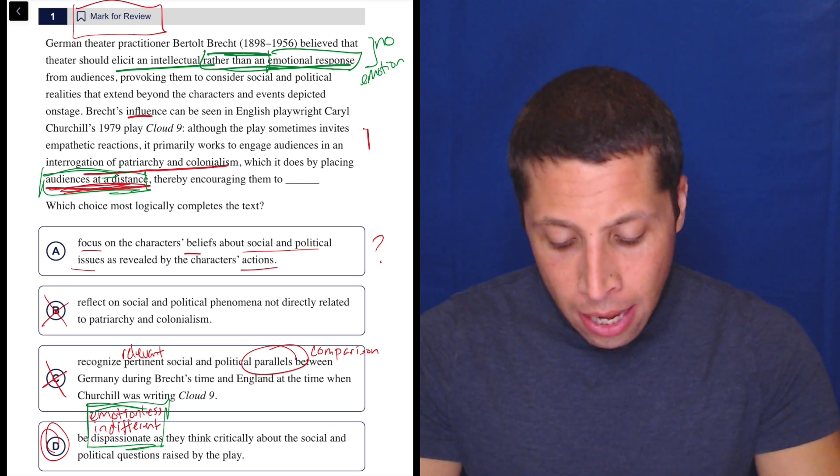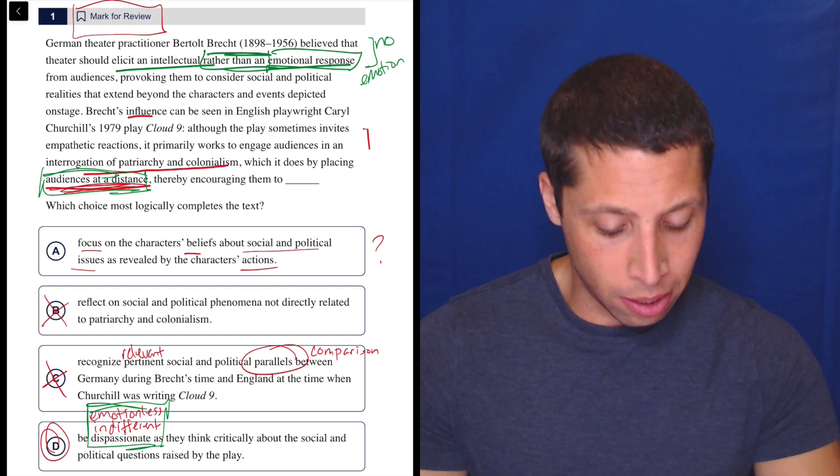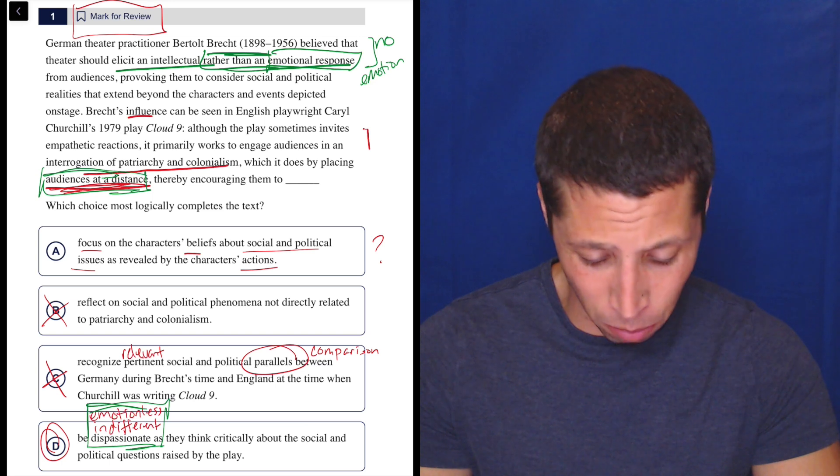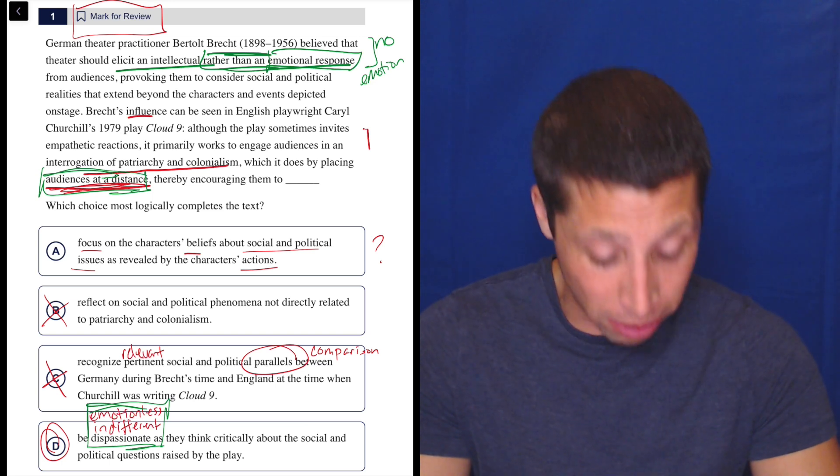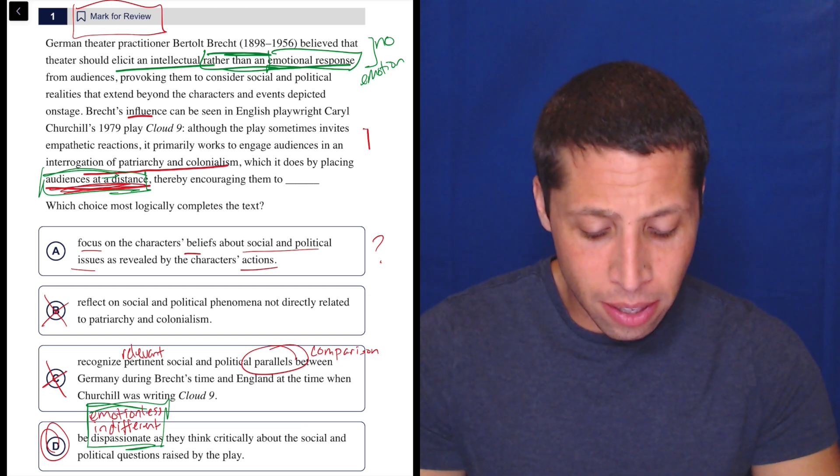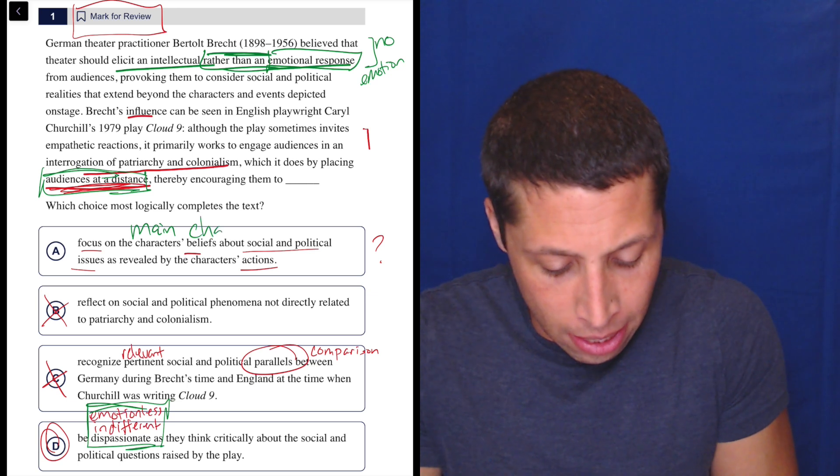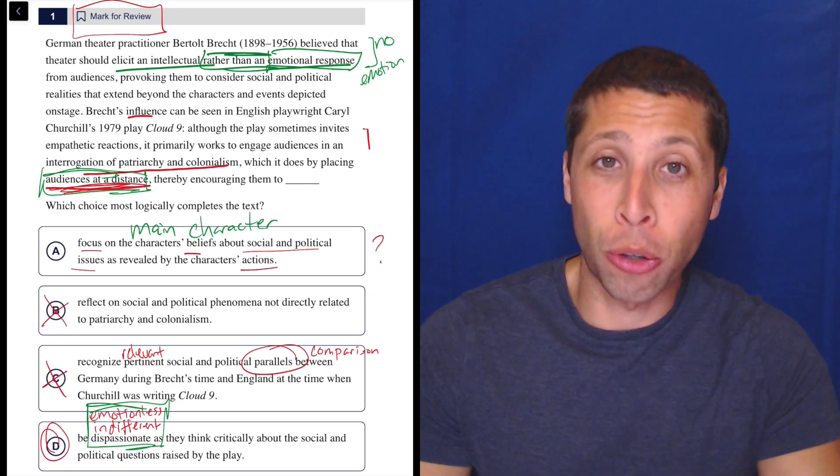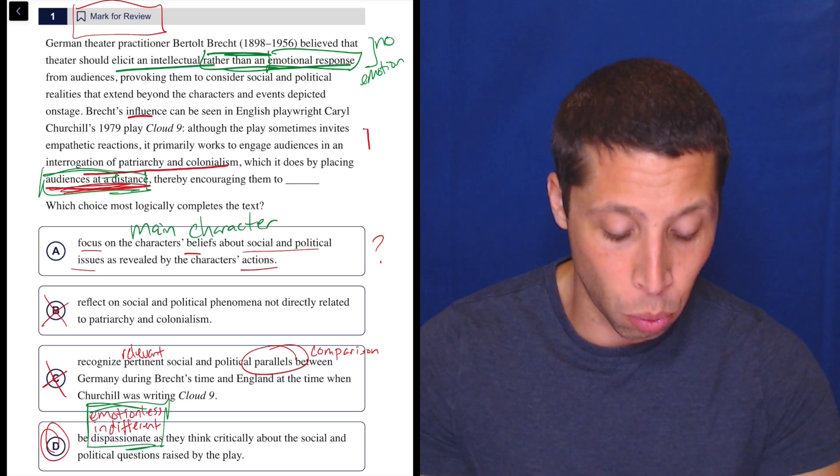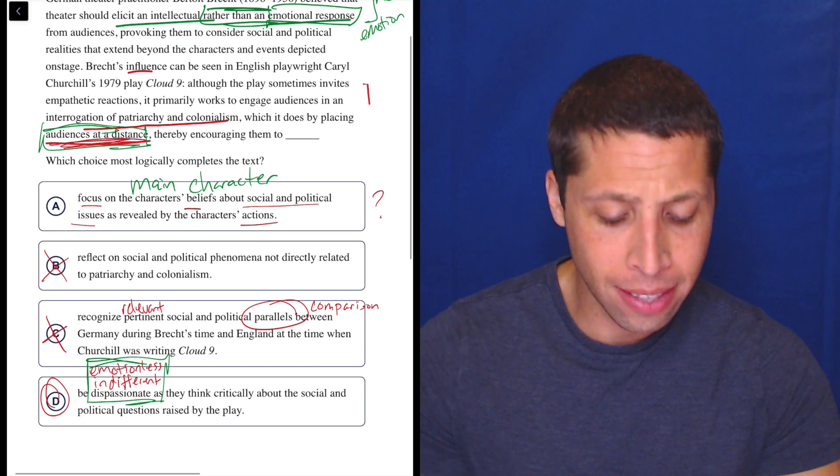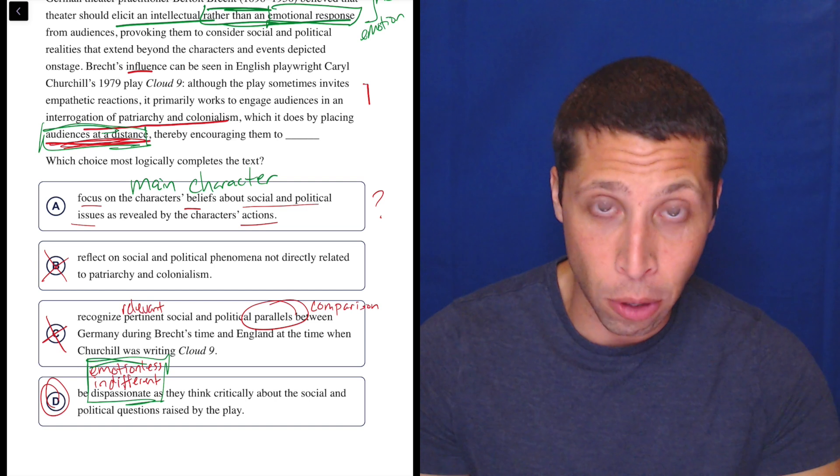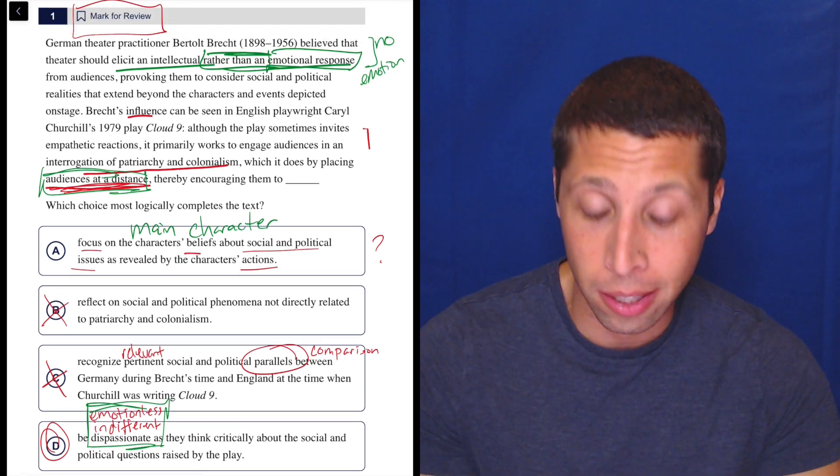But looking at A, it's more just that this stuff isn't talked about. The encouraging them to focus on the characters' beliefs, I don't know what the characters believe. The play is about patriarchy and colonialism, but I don't know what the characters believe about that and about social and political issues as revealed by the characters' actions. Again, it doesn't – maybe the key piece here is this is the – I know we're talking about characters, but in terms of the traps that I regularly talk about in these answer choices, this is a main character trap. The choice is about the actors or about the characters in the play. That is not what this passage is about. The passage is about the plays themselves and the audiences of those plays.